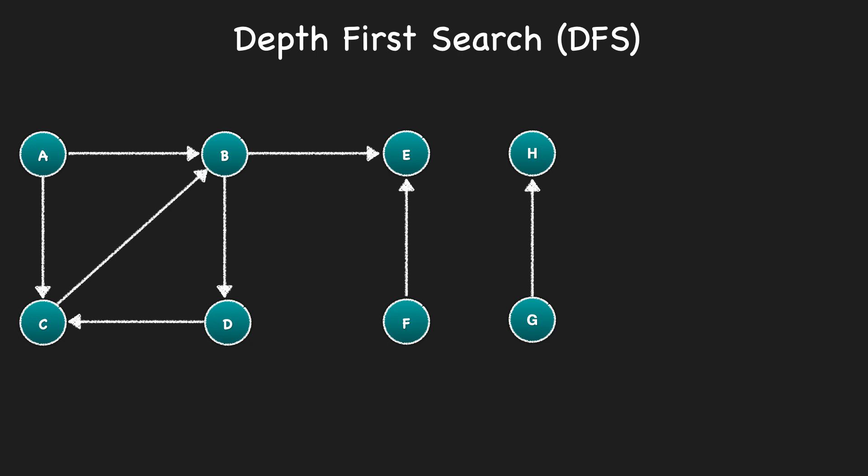So this graph here can be represented as an adjacency list where each node is a key and its value is a list of neighbors. If you'd like a refresher on the graph data structure and its various representations, please be sure to check out my video on it which I have linked to in the description.